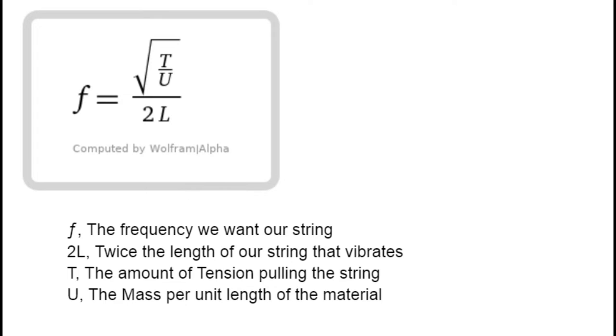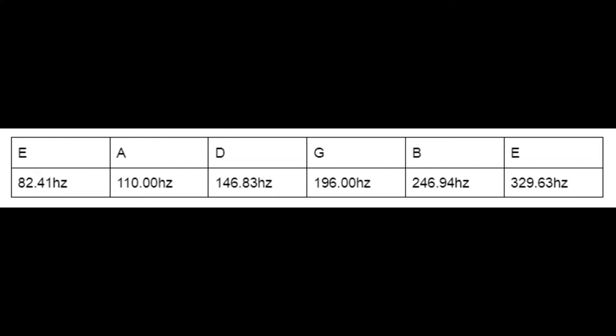F, the frequency we want our string, 2L, twice the length of our string that vibrates, T, the amount of tension pulling the string, and U, the mass per unit length of the material. Starting with the frequencies we want,